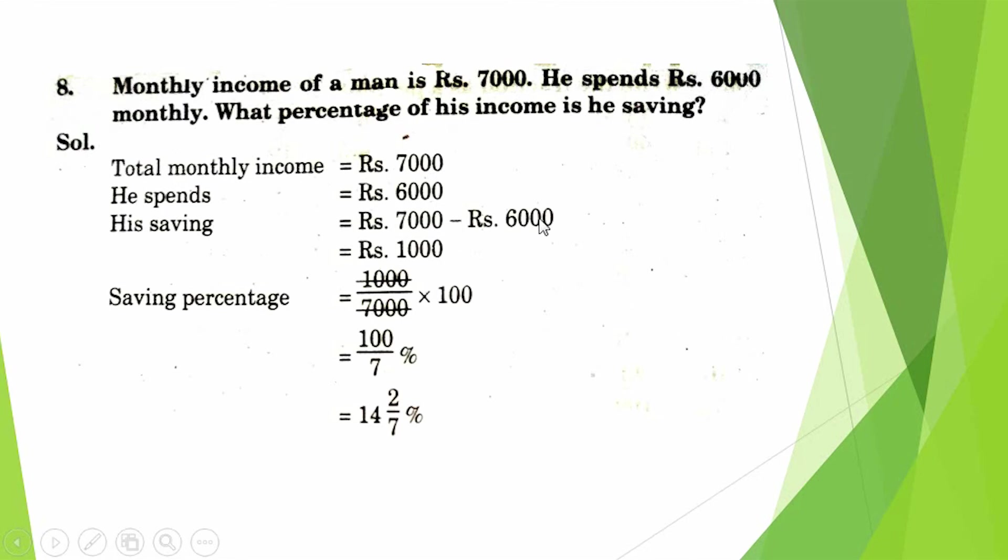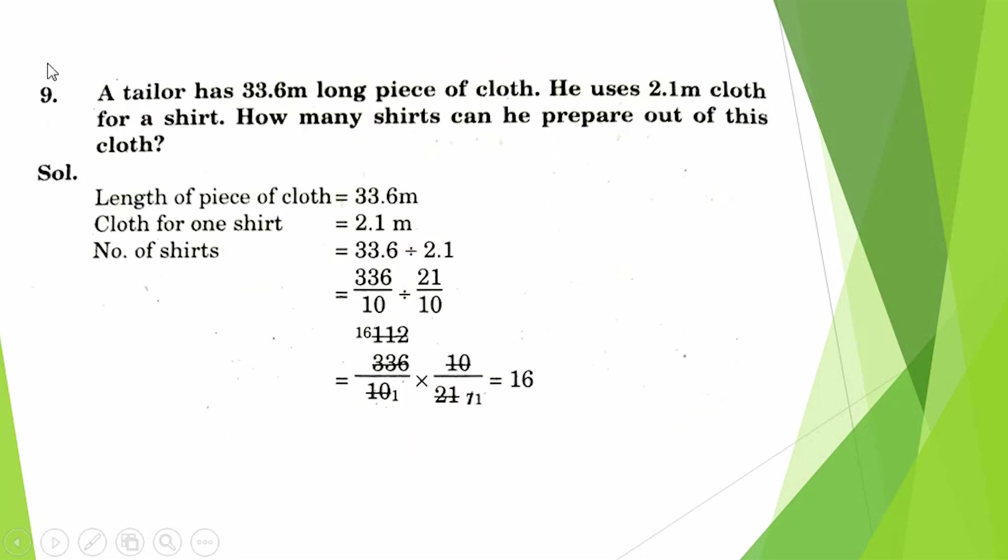Monthly income of a man is 7000. He spent 6000 monthly. What percentage of his income is he saving? Total monthly income is 7000. He spent 6000. His saving is 7000 minus 6000. Answer comes 1000. Saving percentage: when we divide this saving amount by the total income, the answer comes 14 and 2/7 percent.